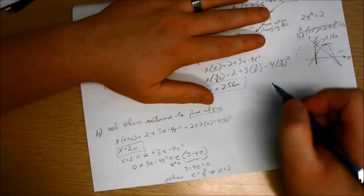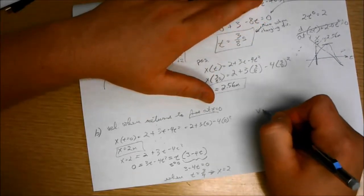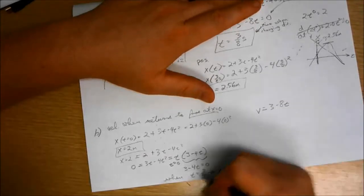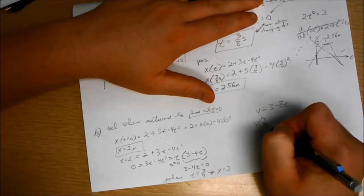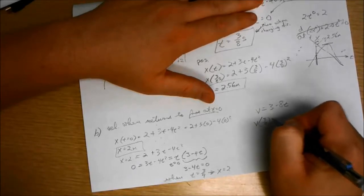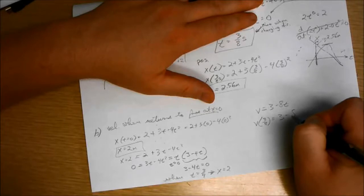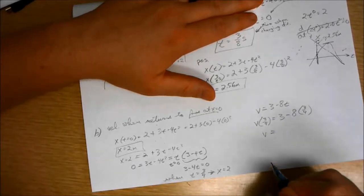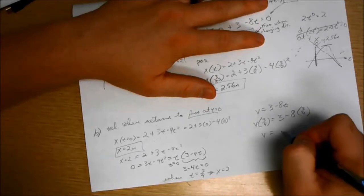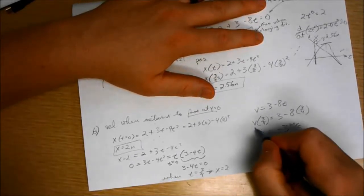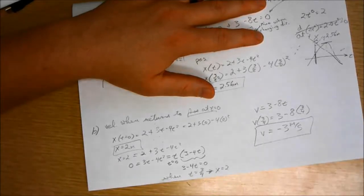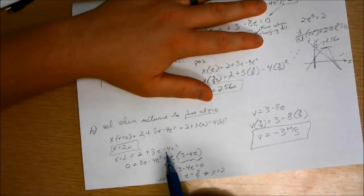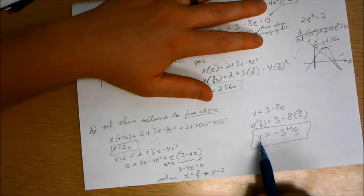So now we can go back to the velocity equation. Velocity equals 3 minus 8t, and we can plug in 3 fourths. So v of 3 fourths equals 3 minus 8 times 3 fourths. And then the velocity is negative 3 meters per second. So we have found the velocity at 3 fourths of a second.